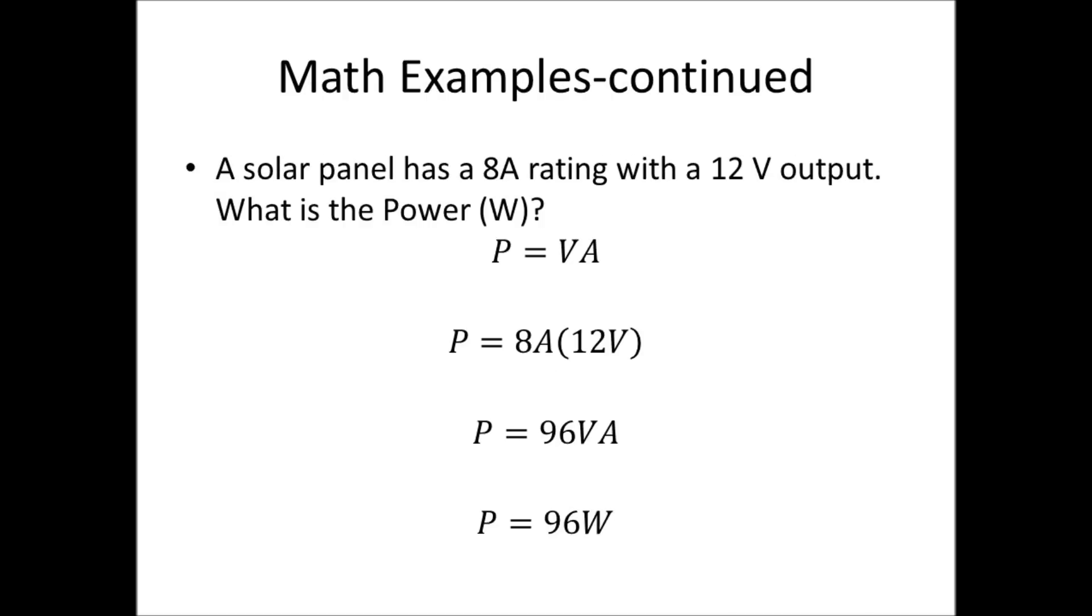Here's another example. If the solar panel has an 8 amp rating with a 12 volt output, what's the power in watts? Well, P equals V times I. So in this case, power equals 8 amps times 12 volts. P equals 96 volt-amps. Since volts times amps equals watts, we can bring that down even more, so P equals 96 watts.